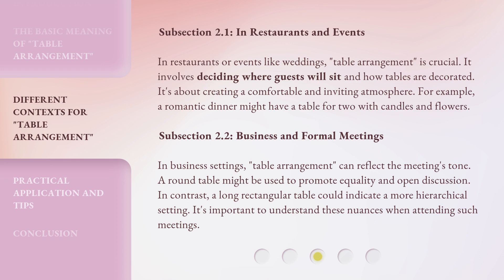In business settings, table arrangement can reflect the meeting's tone. A round table might be used to promote equality and open discussion. In contrast, a long rectangular table could indicate a more hierarchical setting. It's important to understand these nuances when attending such meetings.